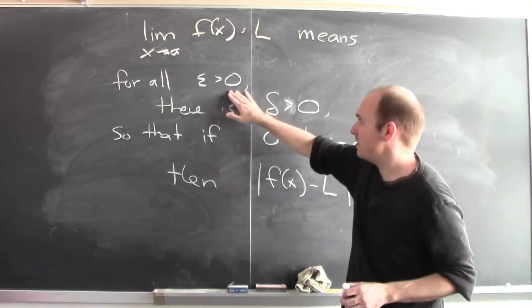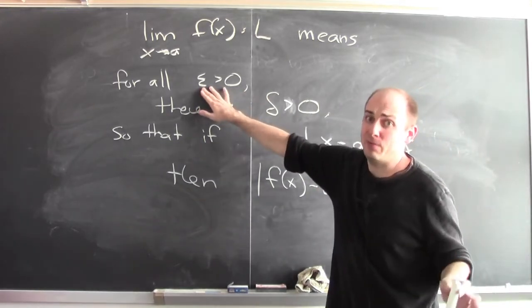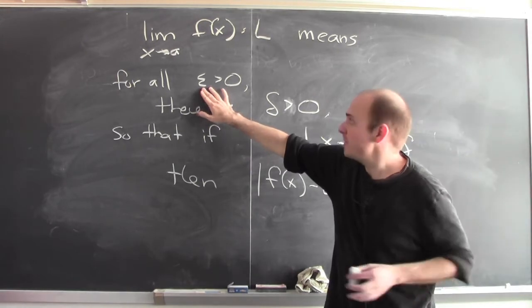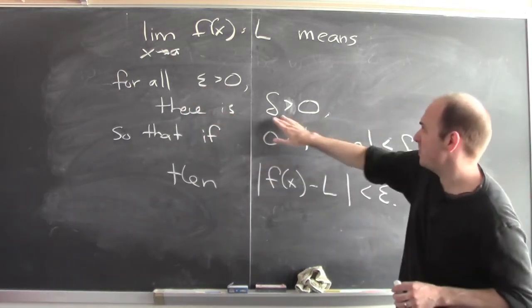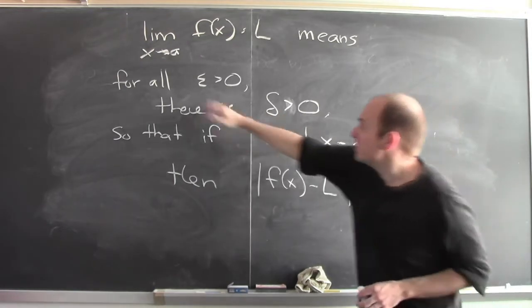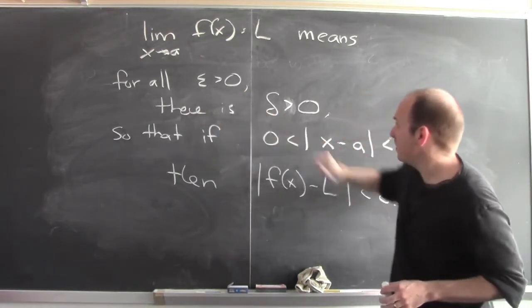For all epsilon bigger than 0—this backwards 3 is the Greek letter epsilon—there's a delta greater than 0. This is the Greek letter delta.